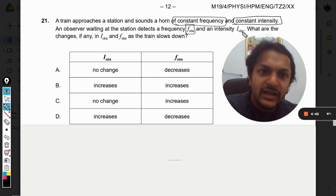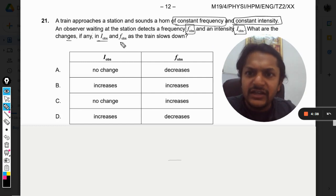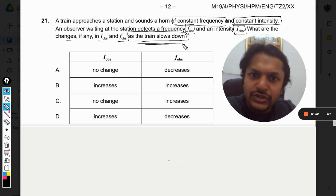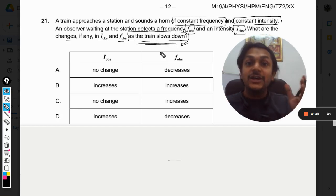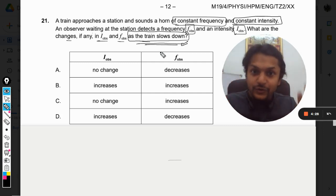What are the changes, if any, in intensity and frequency as the train slows down? Now this is the most important part of the question which we generally forget to read and forget to note down.